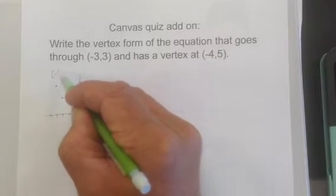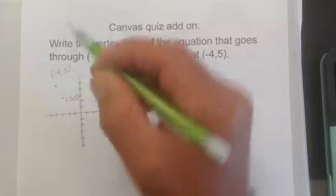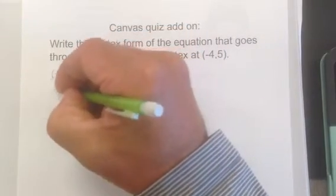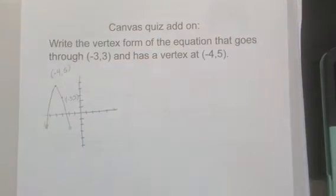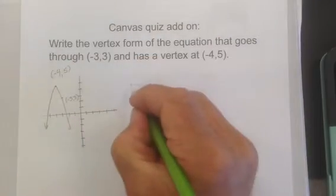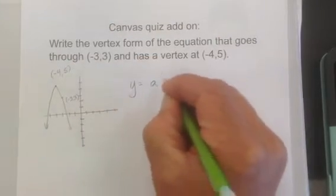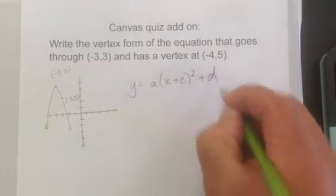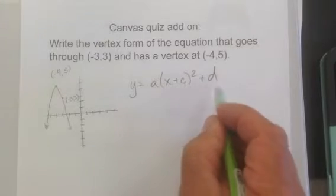There's my vertex. This tells me it opens down and it looks skinnier, so that's kind of important. Vertex form of a parabola: y equals a times x plus c squared plus d. So I'm gonna plug in values for c and d.